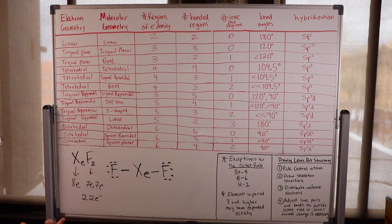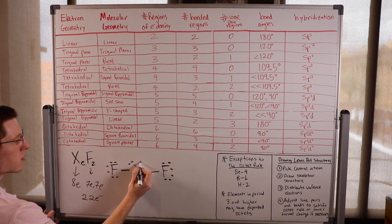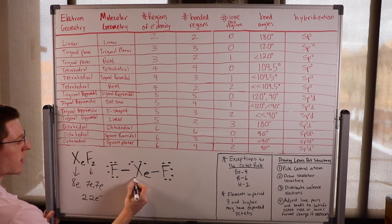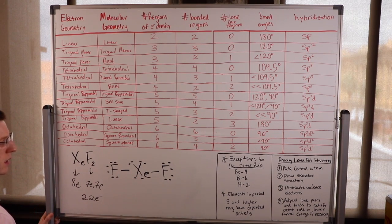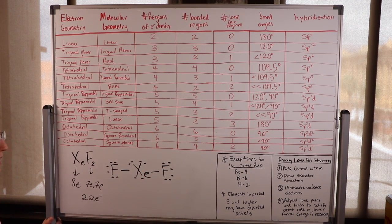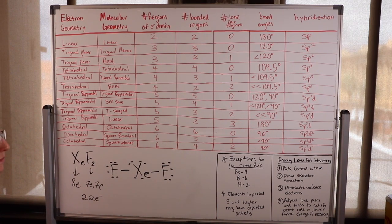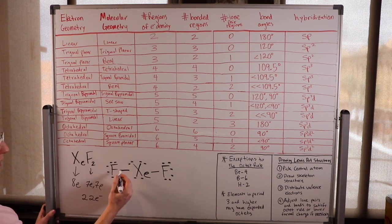The only place to put those remaining six electrons is on the xenon. Xenon now clearly has an expanded octet with 10 electrons. But elements in period 3 and higher may have expanded octets. We used all 22 electrons and the Lewis dot structure is complete.